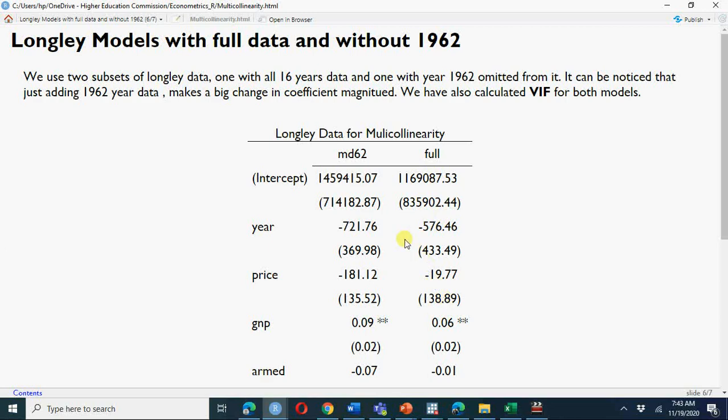You see, just by including one observation, 1962 here, your coefficient magnitudes change by a large magnitude. Then you see the year coefficient: there is maybe a 400 to 500 percent reduction here in the price coefficient and 600 to 100 percent reduction in your armed forces coefficient.